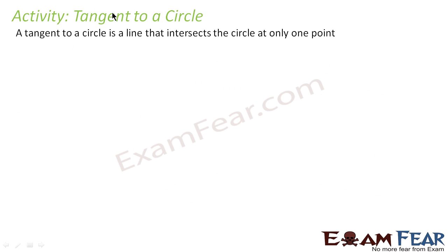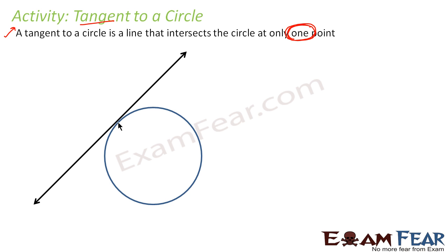Let us do some activity on the tangent to a circle. Before we start, let me repeat the definition: a tangent to a circle is nothing but a line that intersects the circle at only one point. Please focus on this — if a line touches the circle at only one point it is called a tangent; if it touches at two points it is called a secant; three points is not possible. In this activity, we will draw a circle, then draw a line, and rotate the line to see how it touches the circle.